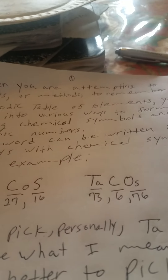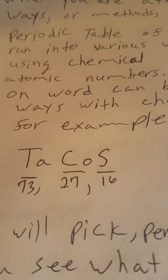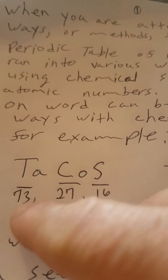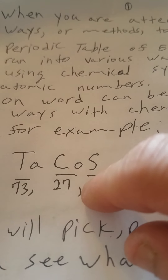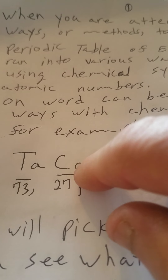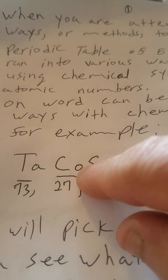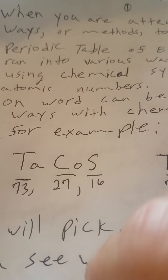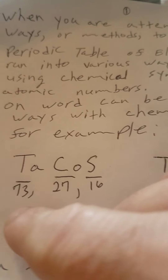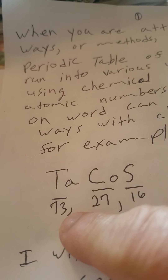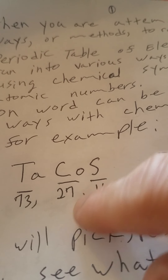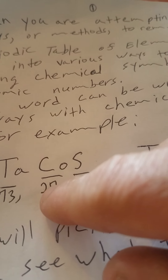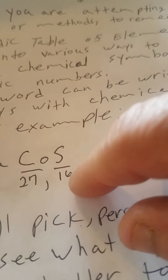When you want to find the chemical symbols for a word, for example, TACOS — T-A-C-O-S — it can be written in three different ways. You can have a capital T and small a, a large capital C with a small lowercase O, and a large S. For example, tantalum is atomic number 73. CO is Cobalt, that's 27. And S, a capital S, is 16.